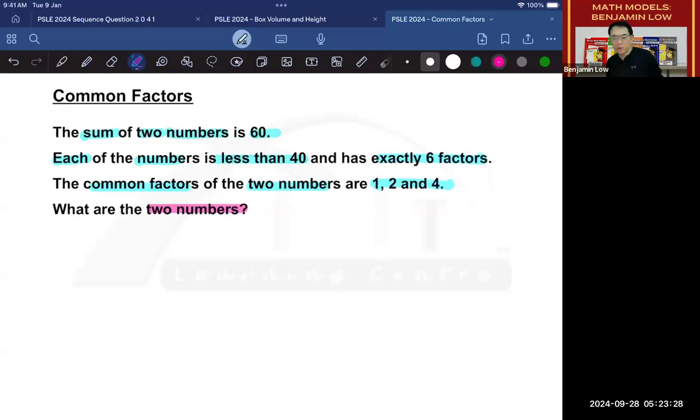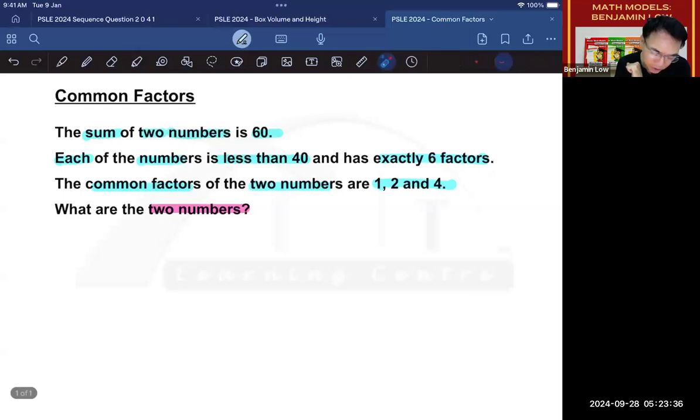Alright, so there are a few limitations here that help you narrow down the numbers you can use. We do know that they expect you to add two numbers together to get 60. So we have two numbers. Let's say this is the first number, this is the second number, and it must add up to 60.